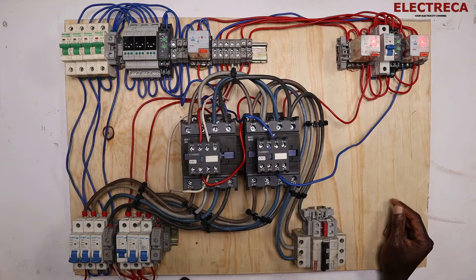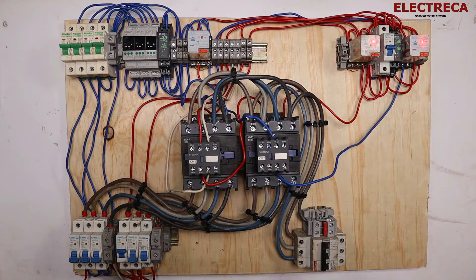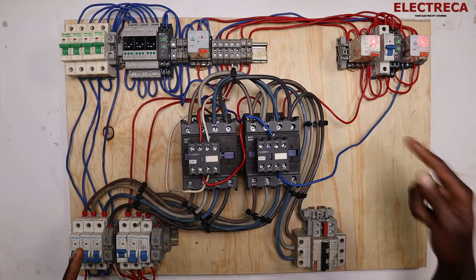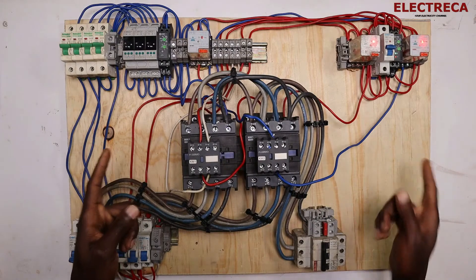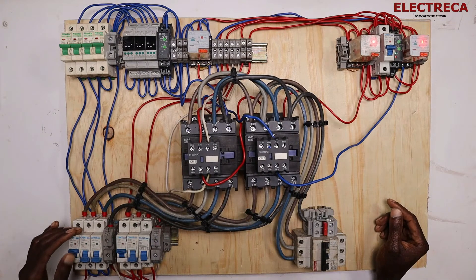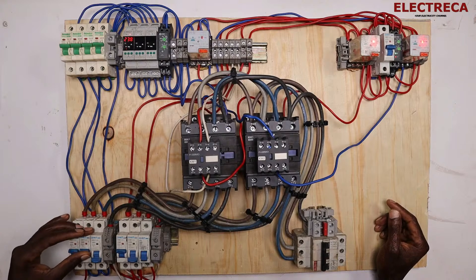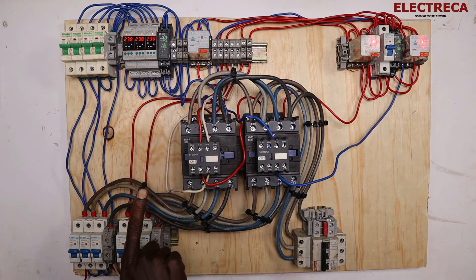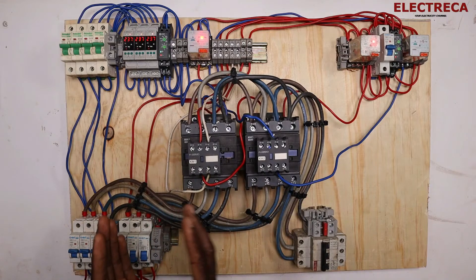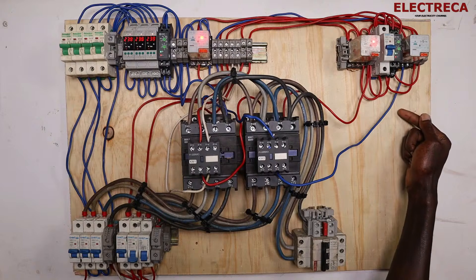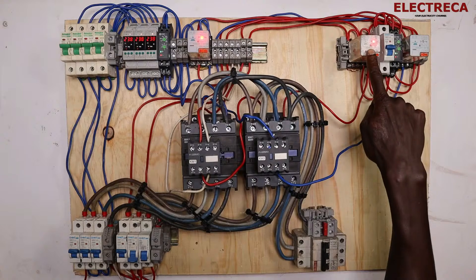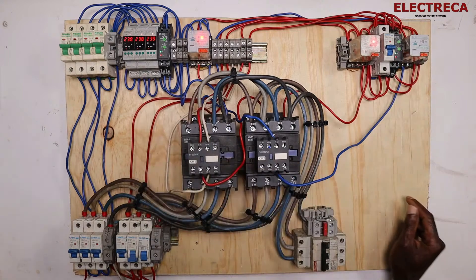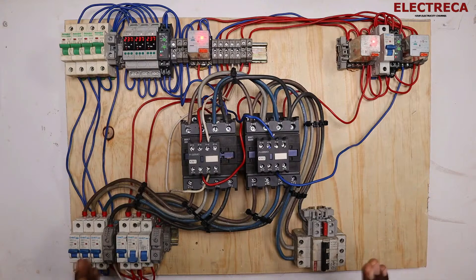One thing you have to understand is priority. The mains is the priority in this configuration. So if the mains resumes while the generator is supplying the load, the mains circuit will override the generator circuit and the mains will take over. All three comparators are on, the timer has run, and the mains has taken over. That's how this circuit operates.